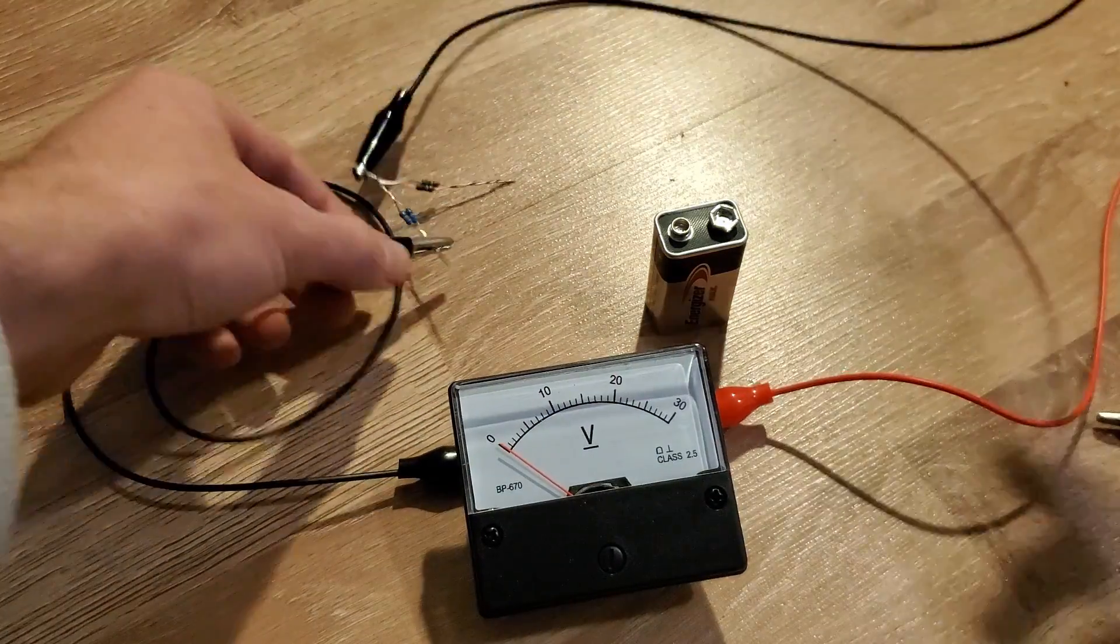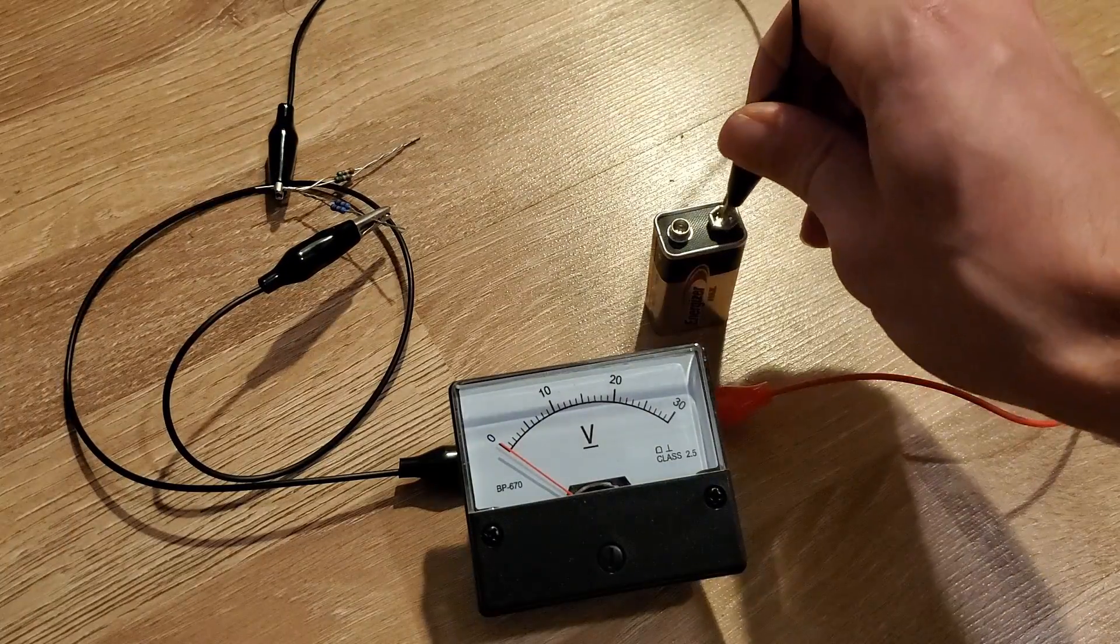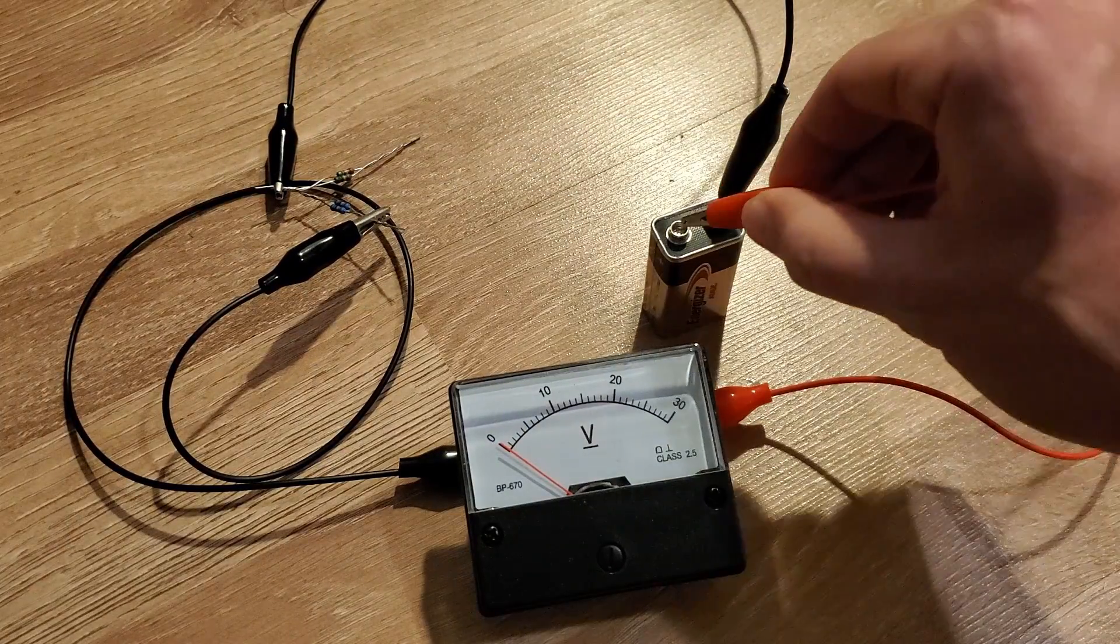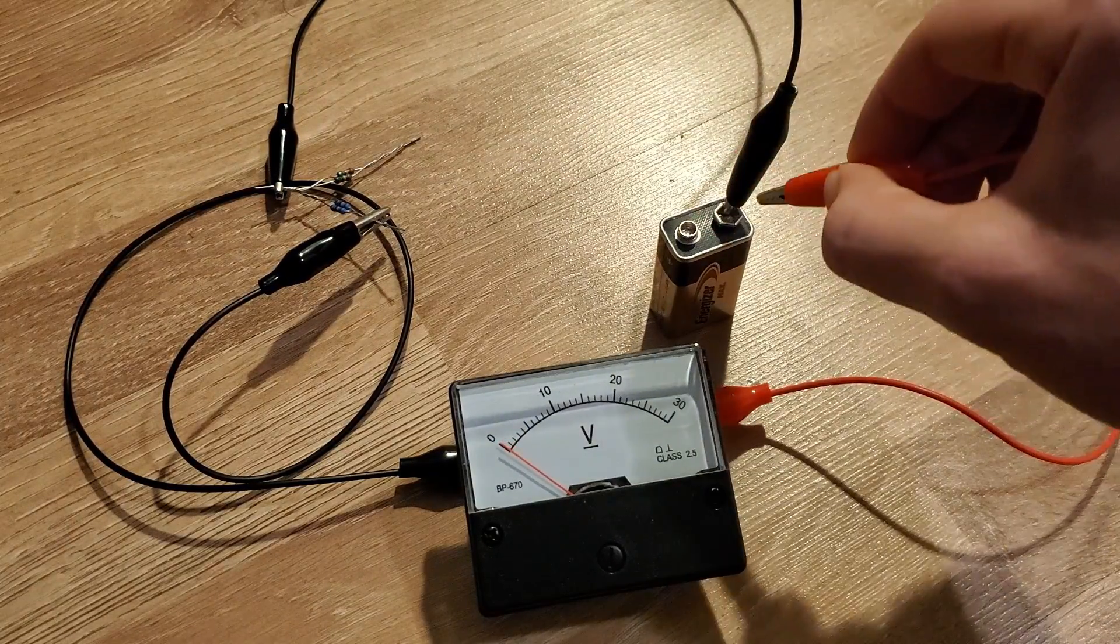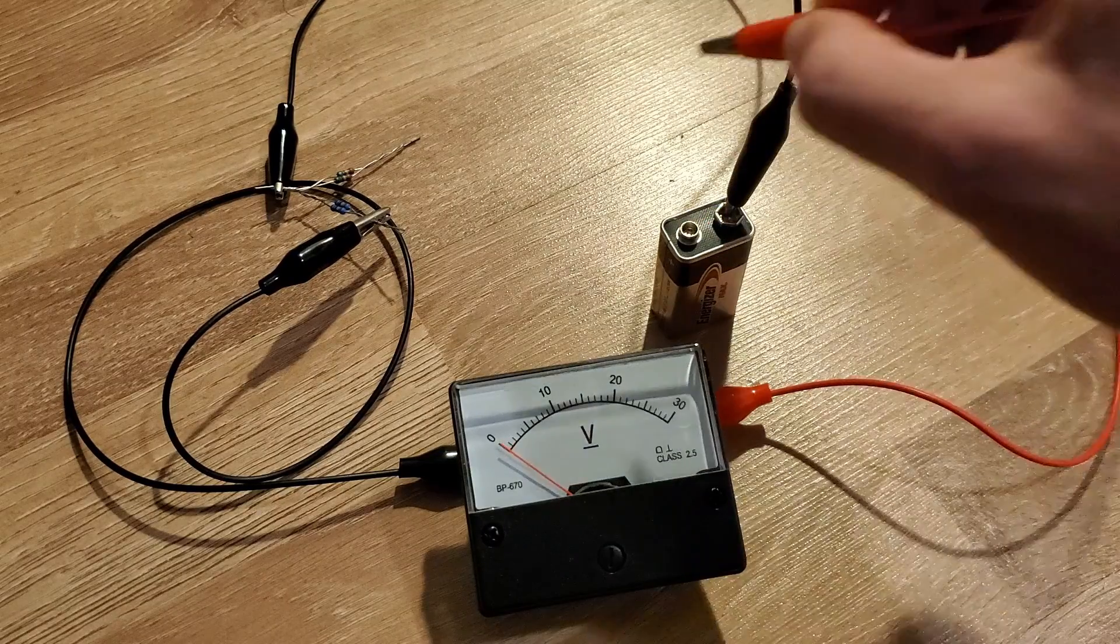If we switch the leads to add the 2.55 megaohm resistor, we should read 0.09 volts, but that's too small to read on our dial.